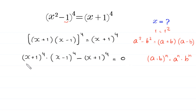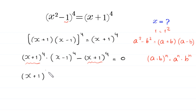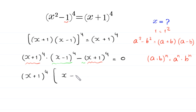As you can see, (x + 1)⁴ is a common factor on the left-hand side. We factor it out, leaving (x + 1)⁴ · [(x - 1)⁴ - 1] = 0.